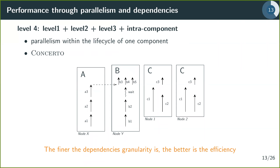The fourth level — the one offered by Concerto — adds dependencies within the lifecycle of a single component. For example, B2 depends on B1, but B3, B4, and B5 have no dependencies, so they can run simultaneously. This adds a parallelism level within components. The finer the dependency granularity, the better the efficiency of the reconfiguration.